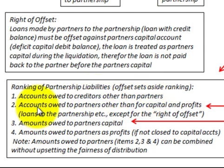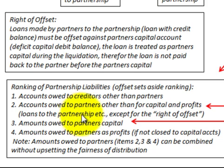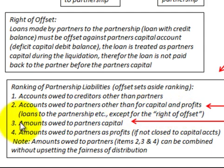Number two: accounts owed to partners other than for capital and profit — that would be loans payable by the partnership to the partner — except when the right of offset applies. If the partner has a deficit in their capital account, then we use the right of offset. Number three: amounts owed to the partner's capital.